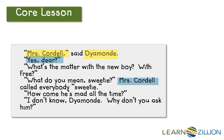'What's the matter with the new boy with free?' Well, I know it's Diamond's turn to talk, since this is a conversation between her and Mrs. Cordell, so she must be saying this. So I'll highlight that part in yellow. 'What do you mean, sweetie?' Well, it says Mrs. Cordell right after this, and the narrator explains that she always calls everyone sweetie, and this is in response to what Diamond said, so I know Mrs. Cordell said this. I'll highlight that in blue. 'How come he's mad all the time?' This is Diamond clarifying what she just asked about free, so I'll highlight that in yellow.